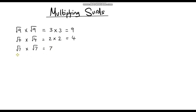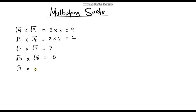Let's do another one just to reinforce that idea. So let's say we had the square root of 10 multiplied by the square root of 10. We're taking the square root of 10 and then multiplying it by itself, so we're just going to be left with 10. Now hopefully these ones have been quite self-explanatory, but what about if we change it slightly? What about if we want to do the square root of 7 multiplied by the square root of 5?